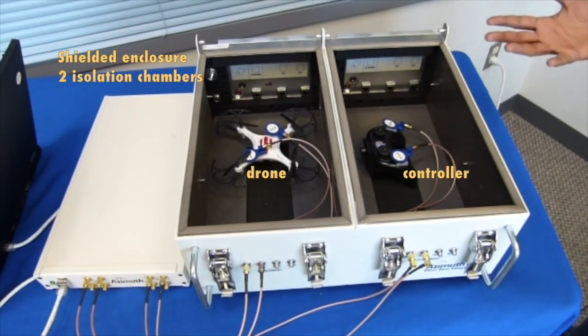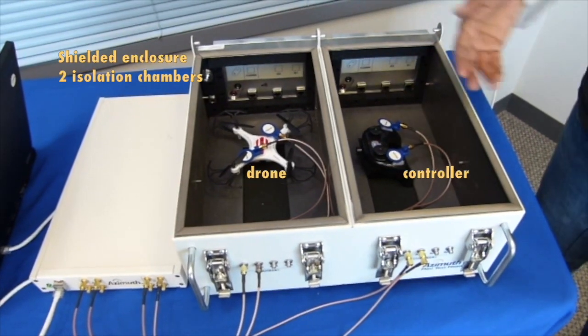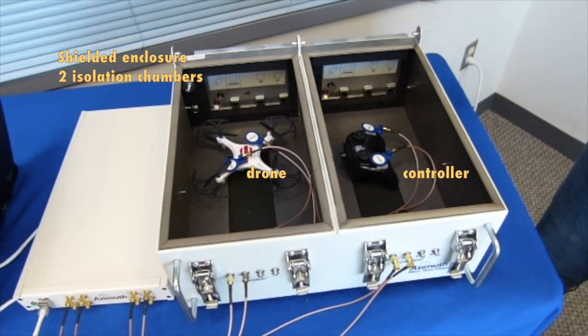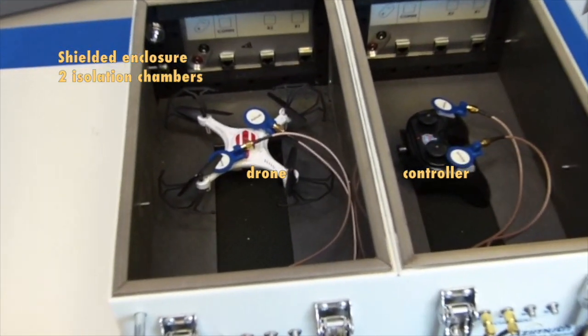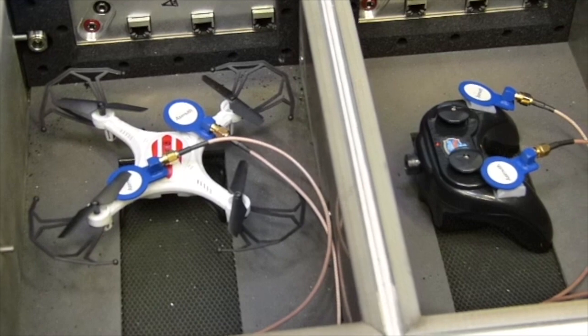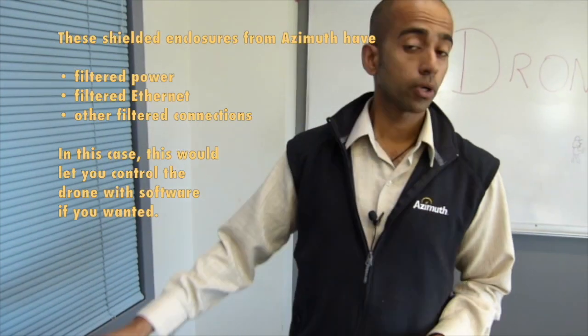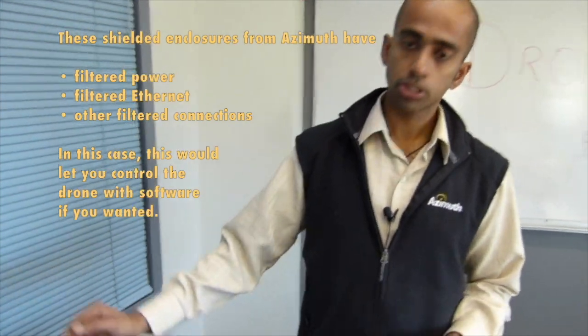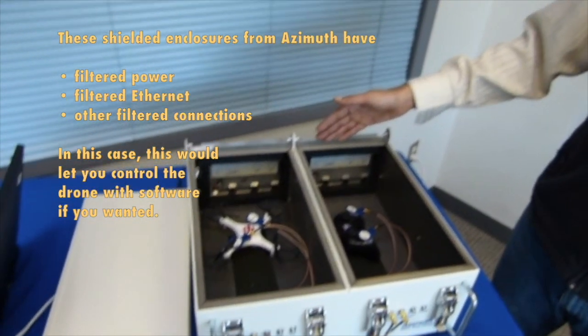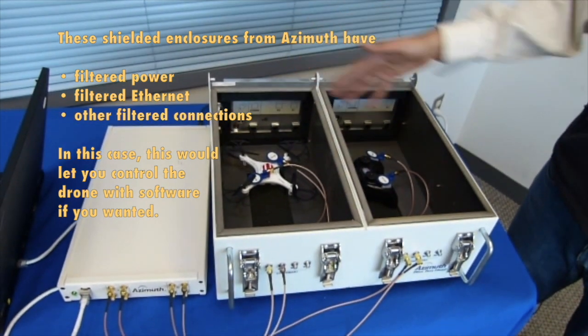Here is a shielded enclosure. As you can see, we have the drone controller in one, and then the actual drone on the other. Why do we need a shielded enclosure? You need a shielded enclosure to make sure that your test results are not impacted by extraneous interference. One thing to keep in mind, these shielded enclosures have filtered power, filtered ethernet, and filtered other kinds of connections.